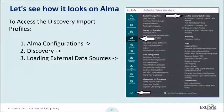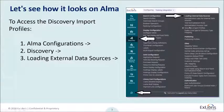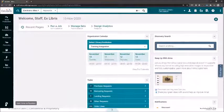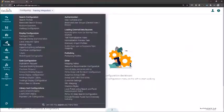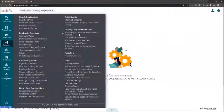As mentioned in our previous session, we're going to click on the ALMA configuration, then go to Discovery. This is where all our PrimoVE configurations are located. We're going to focus today on the loading external data source configurations. The first option will be to create normalization rules for the external data source — this will be our first station for this journey.